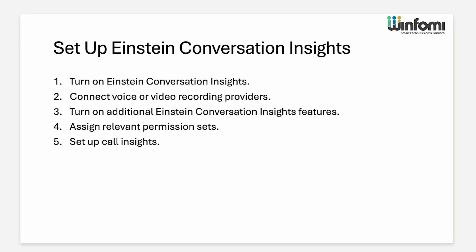Setting up Einstein Conversation Insights involves five steps. First, we need to turn on Einstein Conversation Insights. Then we need to connect to the voice or video recording providers. Then turn on additional insights features, assign the permission set, and set up the call insights. We'll see each one step by step.